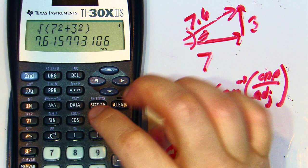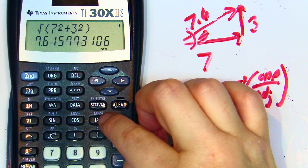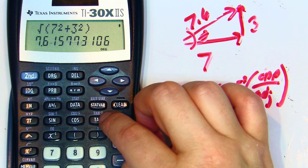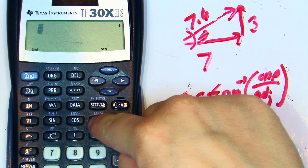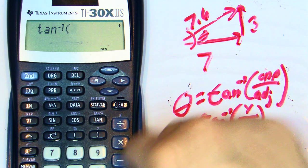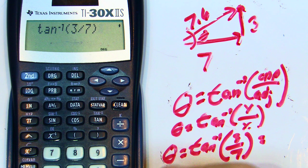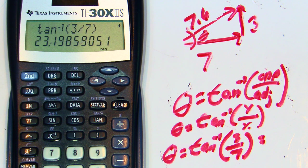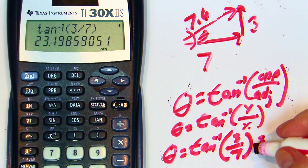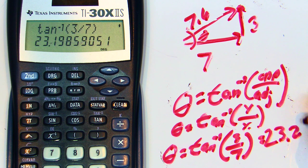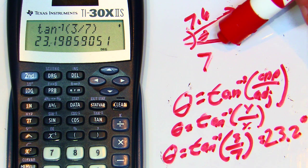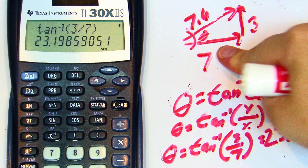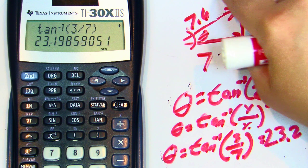Now the question is, how do we do that? You can't just hit the tangent because that's going to give you tangent. But if you look above it, in blue, it says tan minus 1. That's inverse tangent. So how we can do this is, second, inverse tangent, 3 divided by 7. And it shows us our angle, 23.2. So we have 23.2 degrees. There is one more thing you have to do for this. We have to describe where the angle is at.